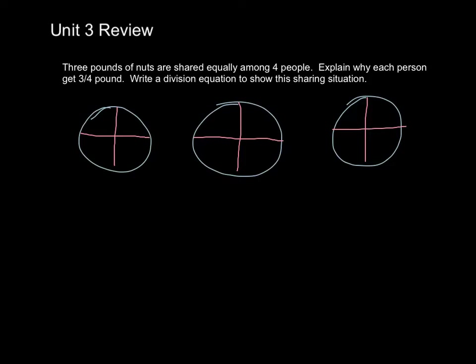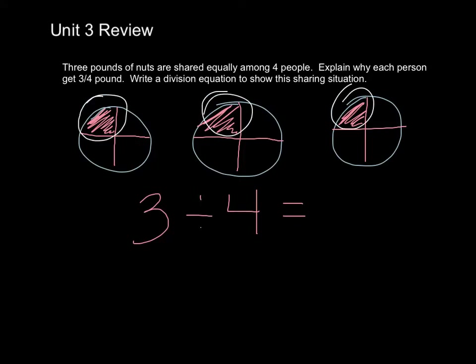And then imagine sharing those out. So the first pound, everybody gets a quarter pound. Second pound, everybody gets a quarter pound. Third pound, everybody gets a quarter pound, right? Fair enough. So what have we done? We've taken three pounds of nuts and we've divided them four ways equally. Basically, where's that three-fourths of a pound come from? Well, one-fourth, two-fourths, three-fourths for each of the four. There you go. Think about it.